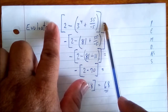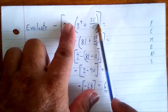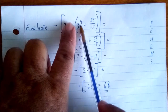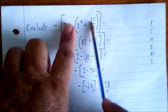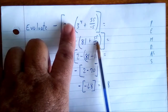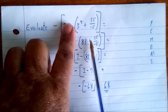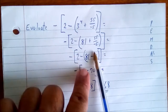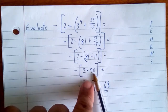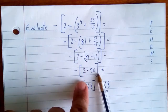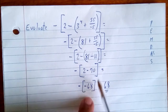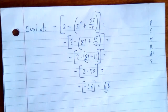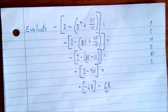To recap: we had brackets, parenthesis, exponent, and division. We zoomed into the inner bracket, found the exponent — 3 to the fourth equals 81 — then did the division: 55 over negative 5 equals negative 11. So 81 take away 11 gives 70. Then 2 take away 70 is negative 68, and the negative out front changes it back to positive 68.